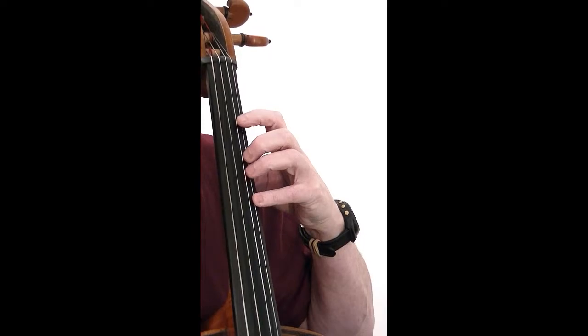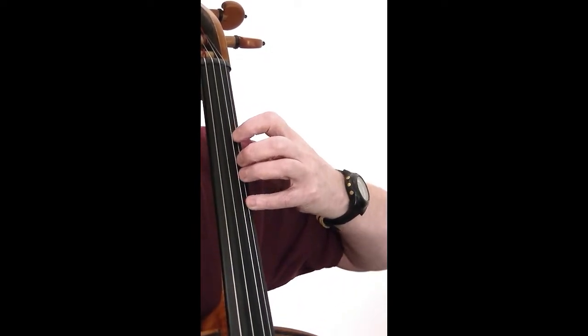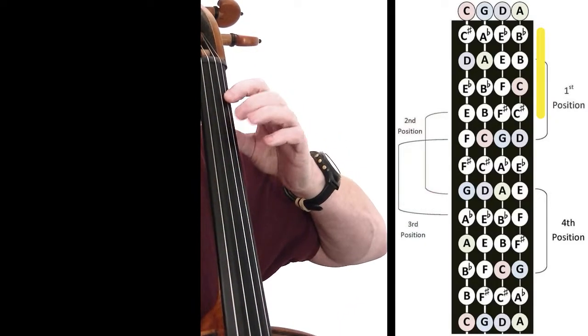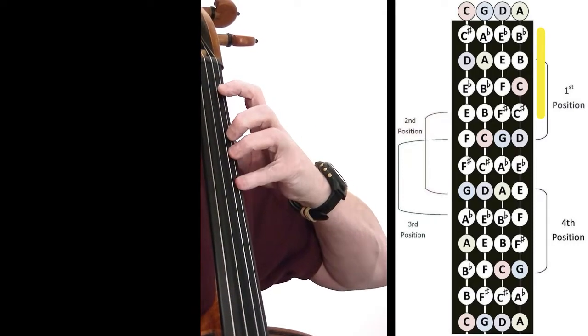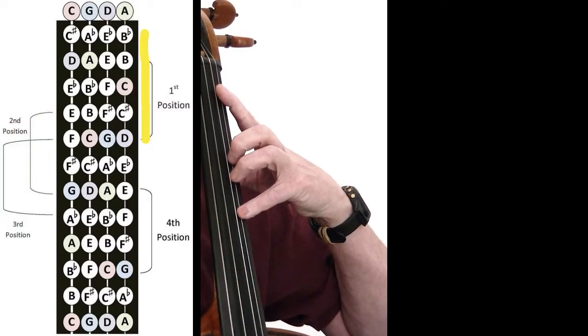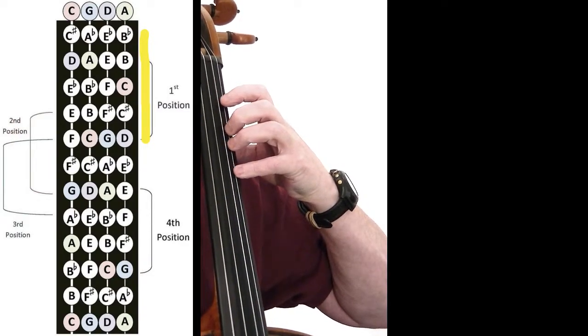Now before we move up the fingerboard, there's half position to talk about. So I'm going to bring my hand back one half step. Now my first finger is on B flat, my second finger is on B natural, third finger on C natural, fourth finger on C sharp. If I extend forward, then we'll look like this. And realistically, we cannot really extend backwards from this point.